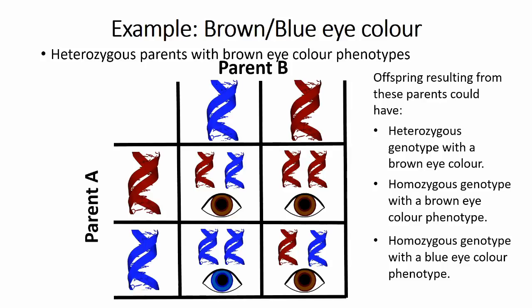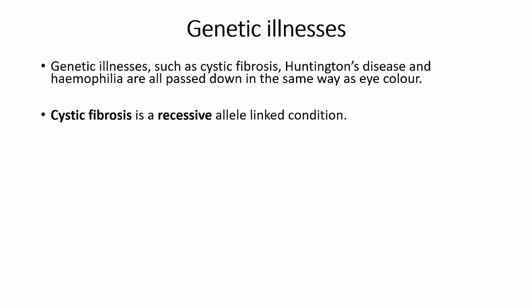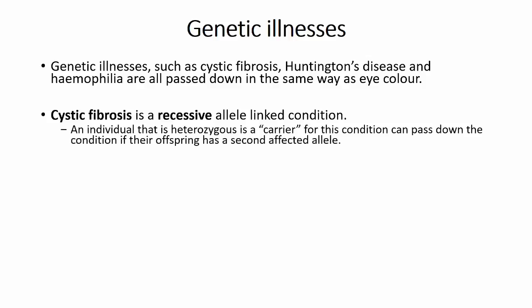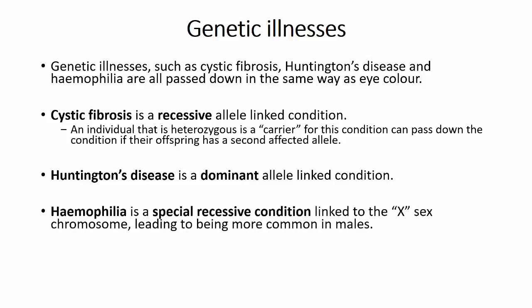Our genes don't just govern what we look like, as they also affect everything that our bodies can do. There are defective alleles that can exist and cause genetic disorders to arise, causing our bodies to not work properly, with issues ranging from rather mild conditions to those that can seriously affect quality of life, or even shorten lifespan in extreme cases. Genetic illnesses often covered as examples include Cystic fibrosis, a recessive condition that causes breathing difficulties and leads to frequent lung infections among other things; Huntington's disease, a dominant condition that occurs late in life and results in the death of brain cells and dementia; and Haemophilia, a recessive condition that affects the blood's ability to clot.